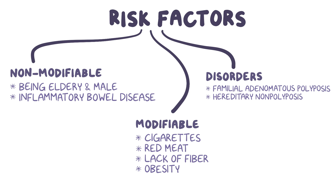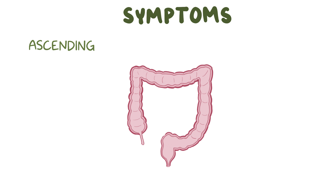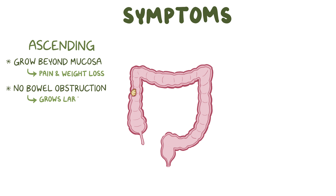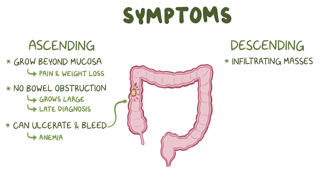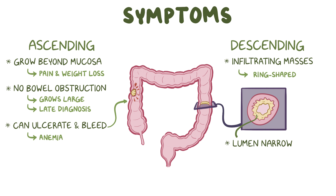Initially, colorectal carcinoma is often asymptomatic, but as the disease progresses, symptoms can develop depending on the tumor's location. Tumors in the ascending or right colon generally grow outward beyond the surface of the mucosa, and that can cause vague abdominal pain and weight loss. Typically these tumors don't cause bowel obstruction, which means they can grow quite large before causing symptoms, often resulting in a late diagnosis. These tumors can ulcerate and bleed, and over time the bleeding can lead to iron deficiency anemia. Tumors located on the descending or left colon are generally infiltrating masses, meaning they tend to be ring-shaped masses that involve the whole circumference of the colonic wall. This causes lumen narrowing, referred to as napkin ring constriction, so symptoms of bowel obstruction typically happen early on. Bowel obstruction can cause colicky abdominal pain and blood-streaked stools, called hematochezia.